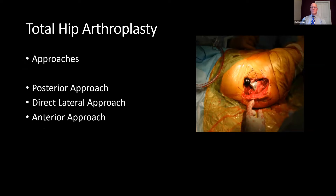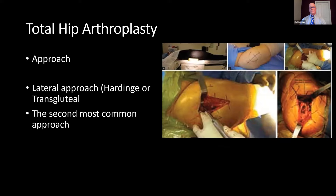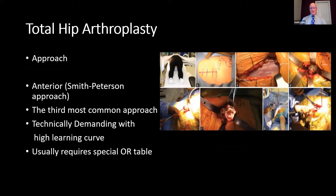There are several approaches to the hip, but most commonly the posterior approach, direct lateral approach, and anterior approach. I also typically use what's called an anterolateral approach. The posterior approach, also known as the Moore or Southern approach, is the most common surgical approach worldwide — going through the gluteus maximus and taking down the short external rotators posteriorly. The lateral approach, also known as the Hardinge or transgluteal approach, is the second most common. The anterior approach, known as the Smith-Petersen approach, is the third most common. It can be technically demanding, has a high learning curve, usually requires a special OR table called a HANA table, and typically needs intraoperative X-rays.